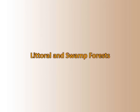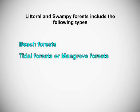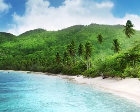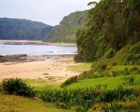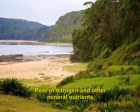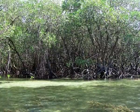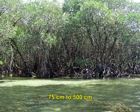Littoral and Swamp Forests include the following types: Beach Forests, Tidal Forests or Mangrove Forests, and Freshwater Swamp Forests. Beach forests are found all along the sea beaches and river deltas. The soil is sandy, having a large amount of lime and salt, but poor in nitrogen and other mineral nutrients. Groundwater is brackish.